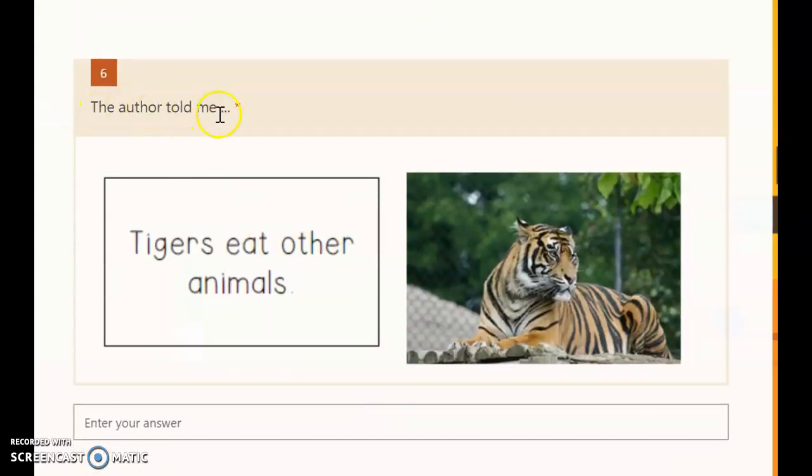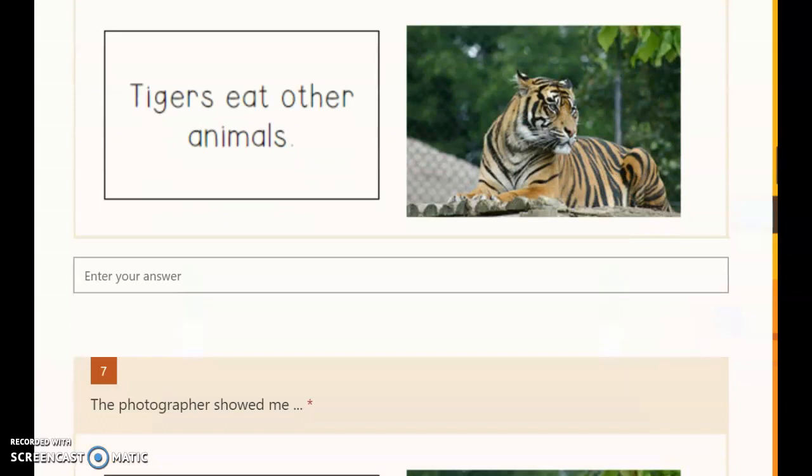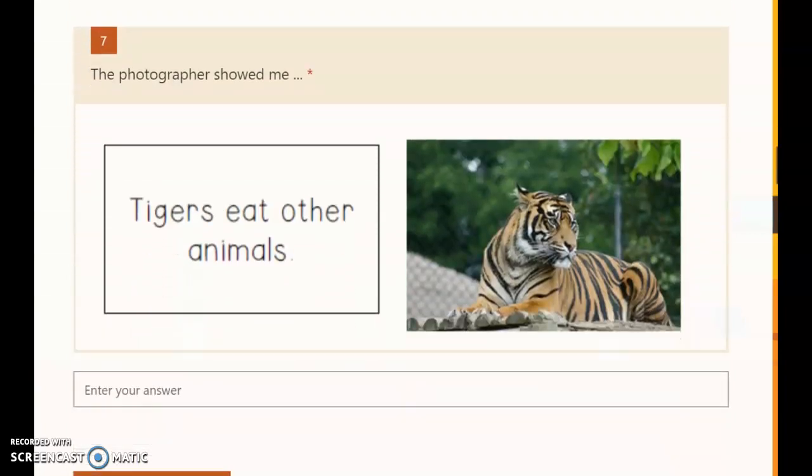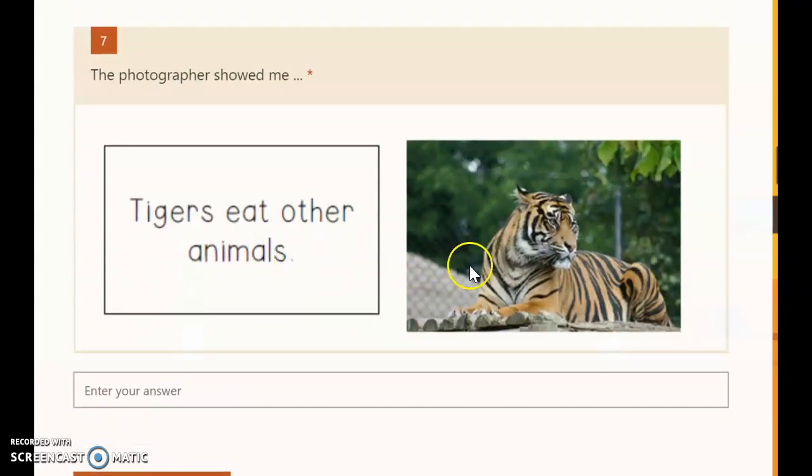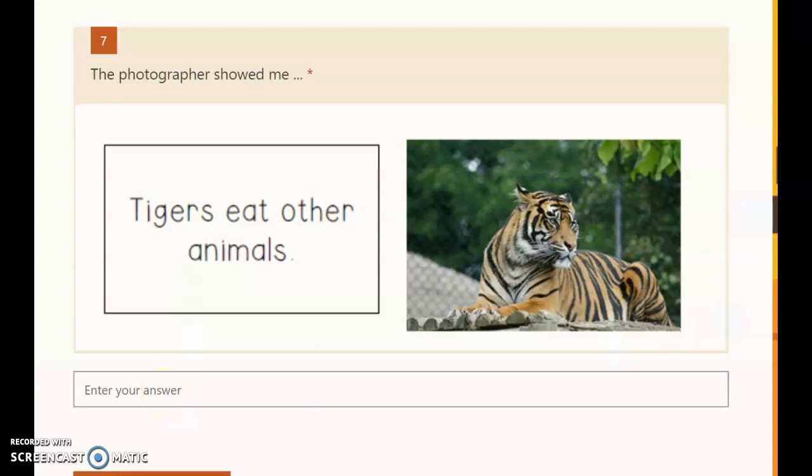Number six, the author told me, was it tigers eat other animals or something from the photograph? You are going to type in your answer here. What did the author teach you here? Then with the same set of information, it says the photographer showed me, and you're going to type your answer here. What information did you get from the photographer?